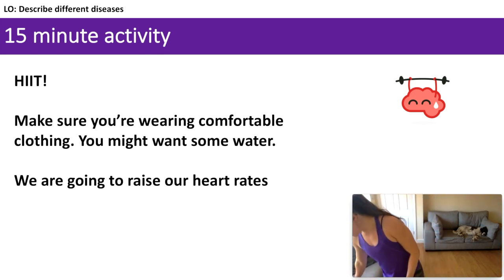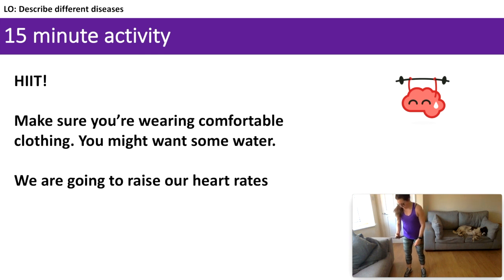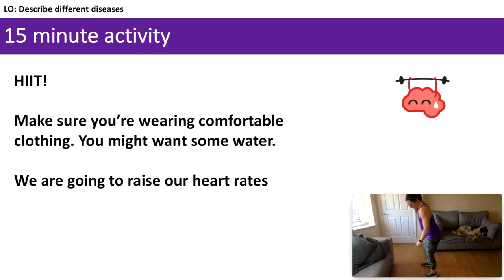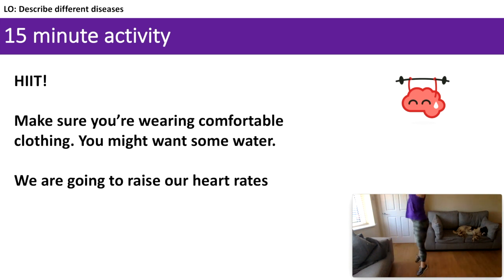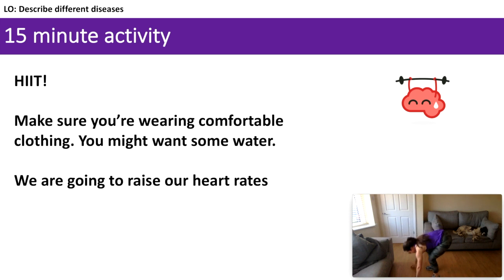Burpees — minute and a half. Three, two, one, go. Out, in, jump. Out, in, jump. When you increase muscle contraction, the short-term changes are: your heart rate increases, your breathing rate gets deeper and also increases. 30 seconds down, one minute to go. Halfway there. 30 seconds left — we can do this. 10 seconds. That's the last one — three, two, one.